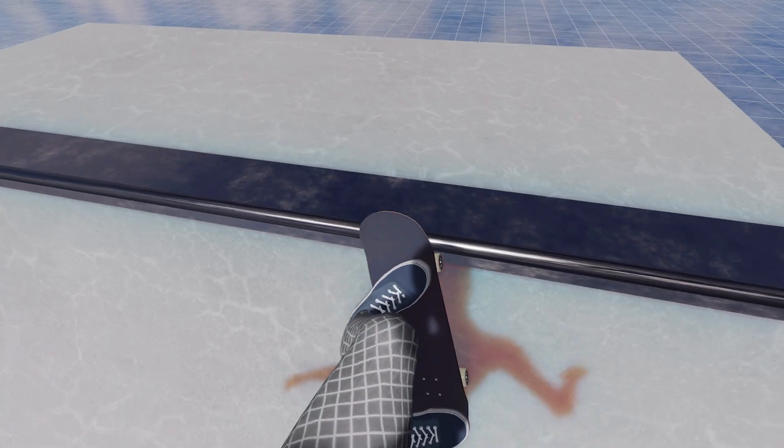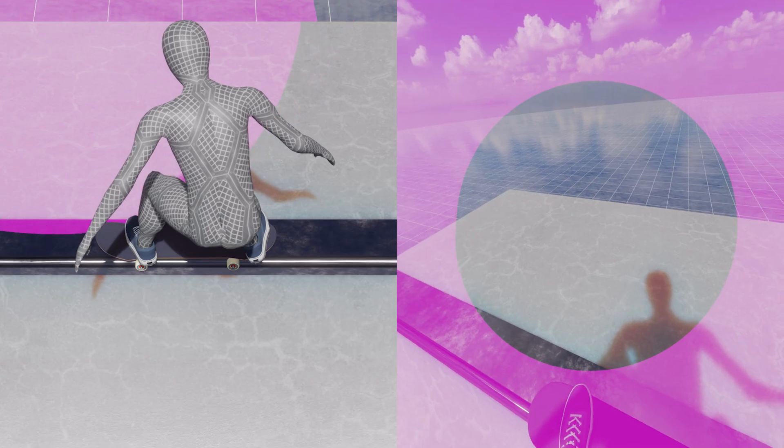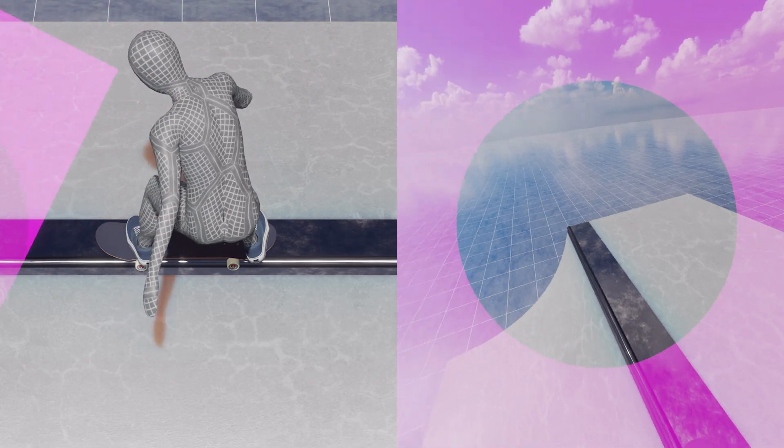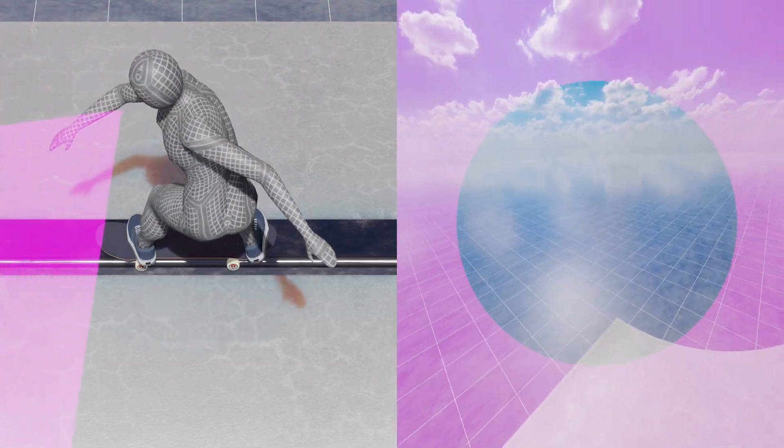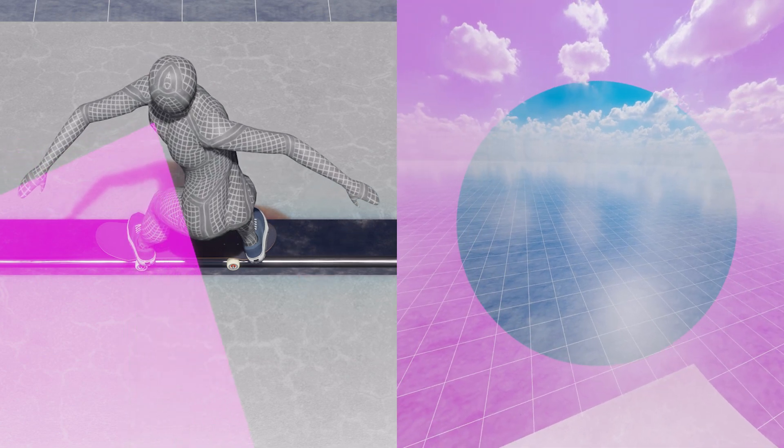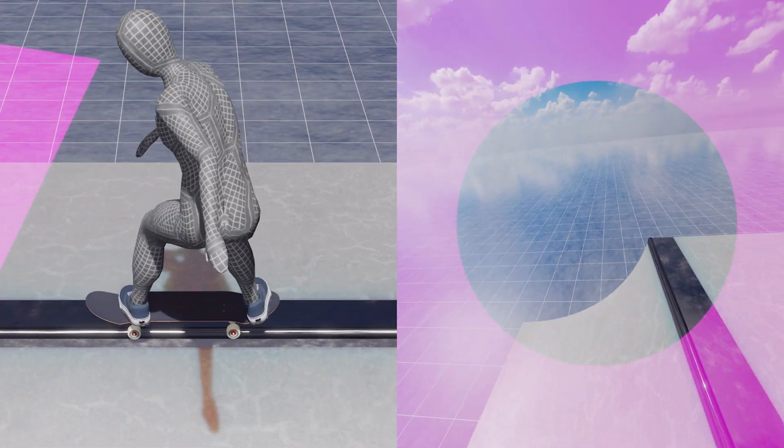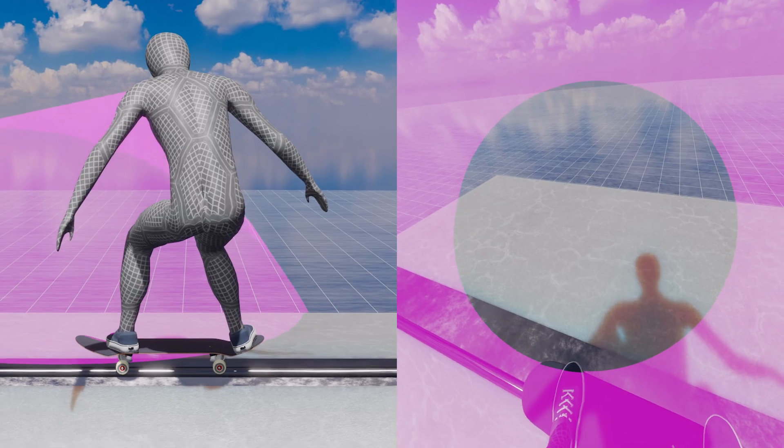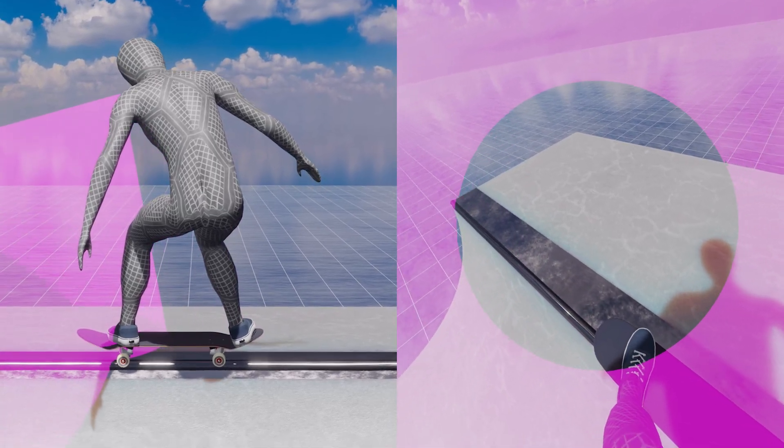While others may feel safer when they can see the direction they'll be heading. To do this, you do not need to twist your upper body all the way 180 degrees. Just lower your front arm and glance right beside it, and you'll naturally see the way forward.